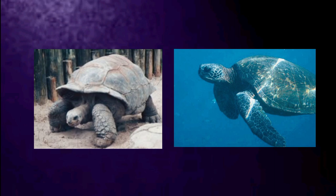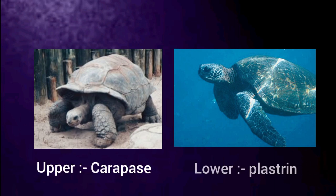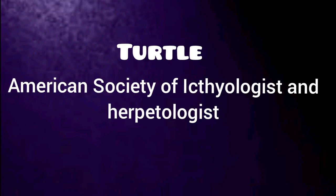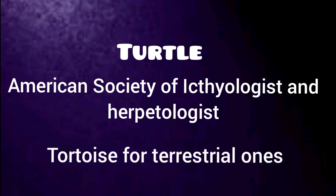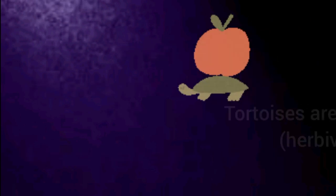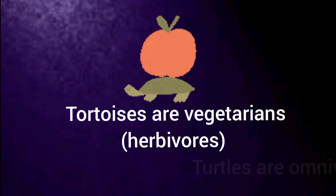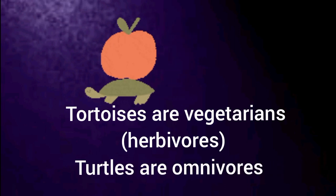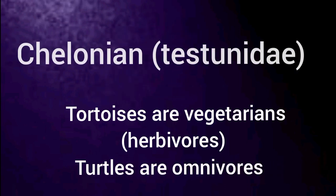The bodies of tortoises and turtles are both shielded by a shell. The upper part is called Carapace and the lower portion is called Plastron. The American Society of Ichthyologists and Herpetologists uses 'turtle' to describe all species of the order Testudines and 'tortoise' for terrestrial ones. Tortoises are generally vegetarians while other turtles are omnivores. Both belong to the same family, that is the Chelonian family.